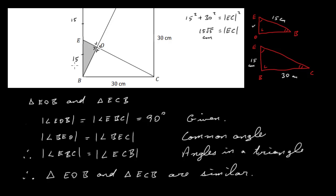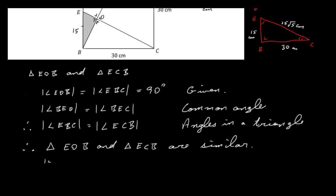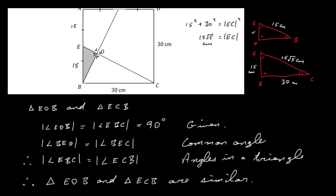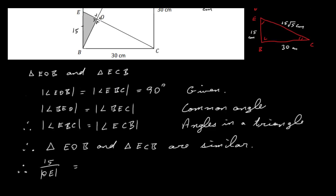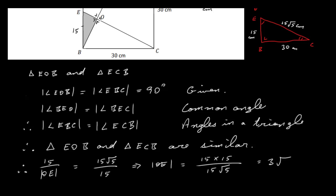Now applying the similar triangles ratio: 15/OE = 15√5/15. Solving: OE = (15 × 15)/(15√5) = 15/√5 = 3√5 cm. So the length EO = 3√5 cm, which is in the required form a√b.